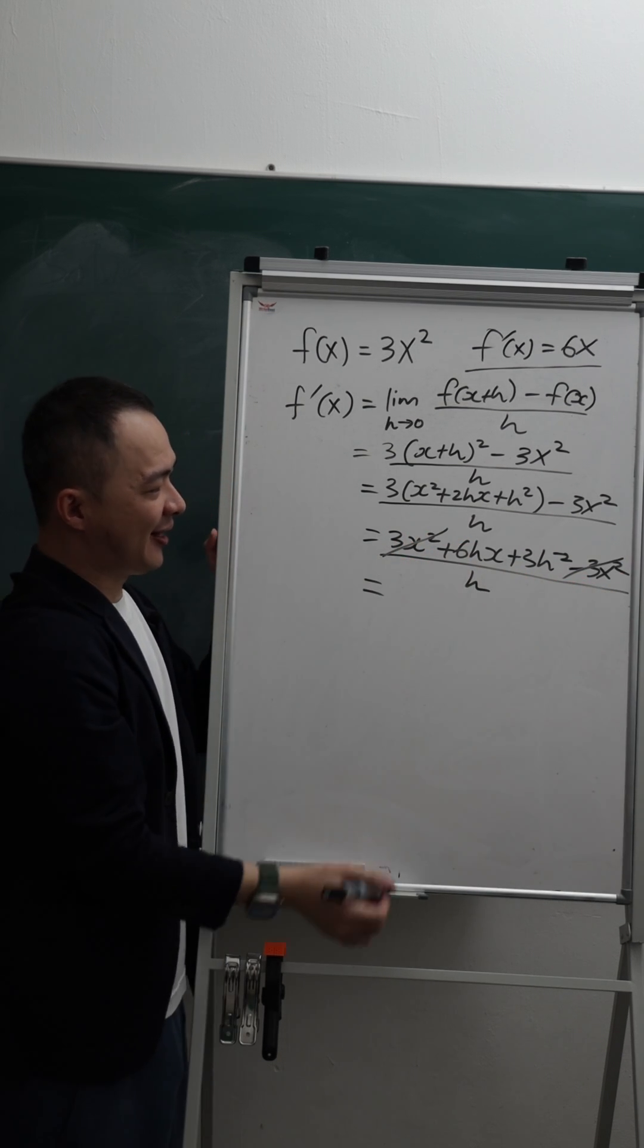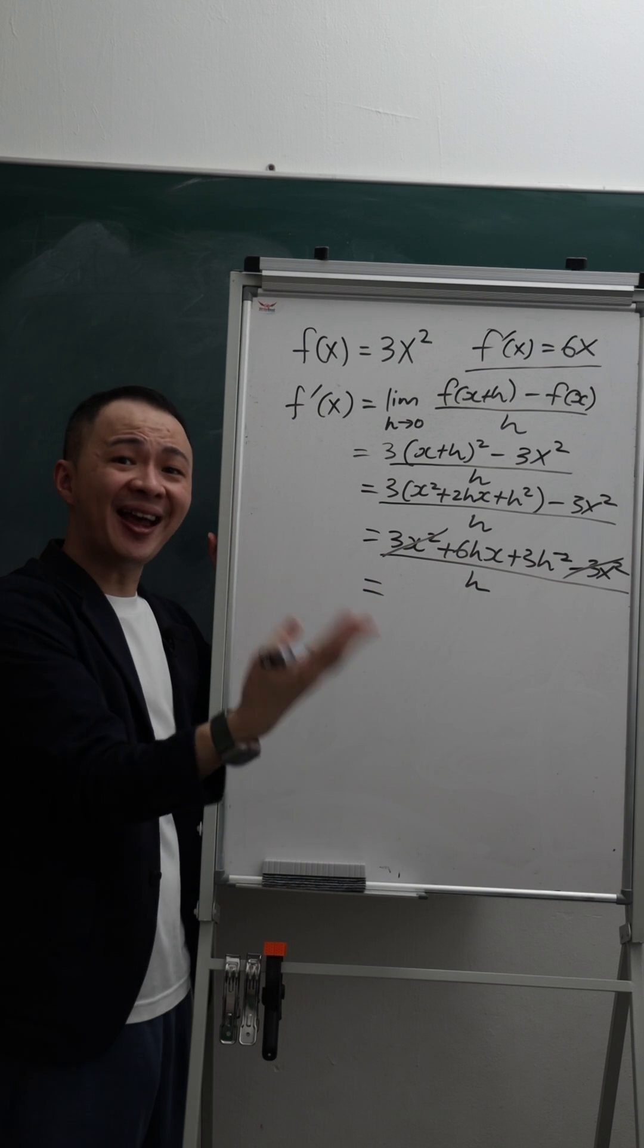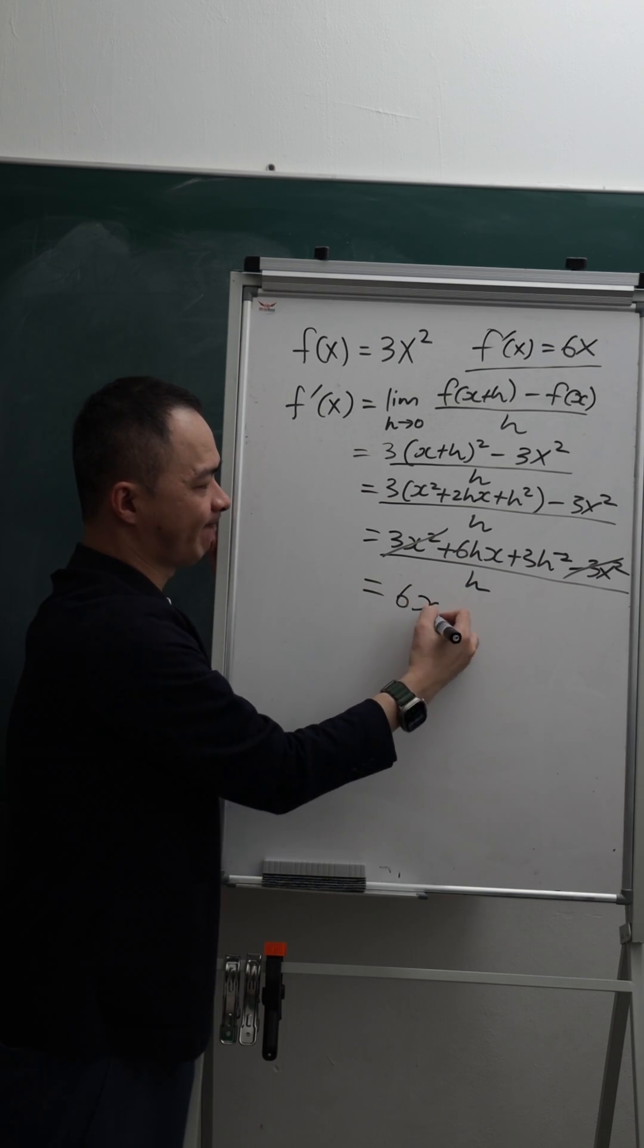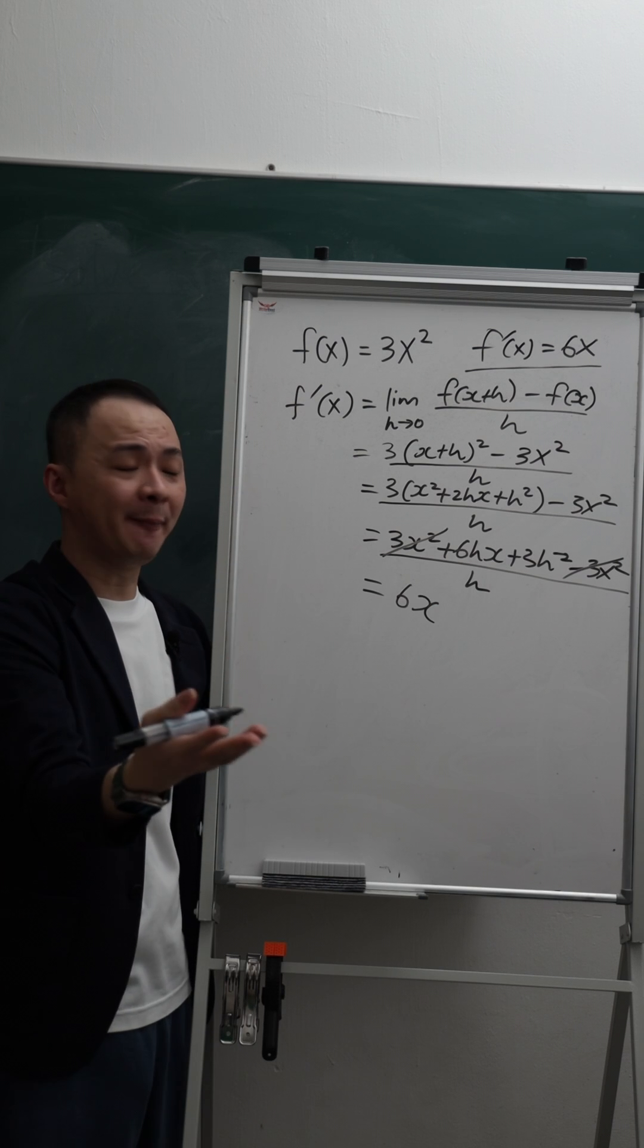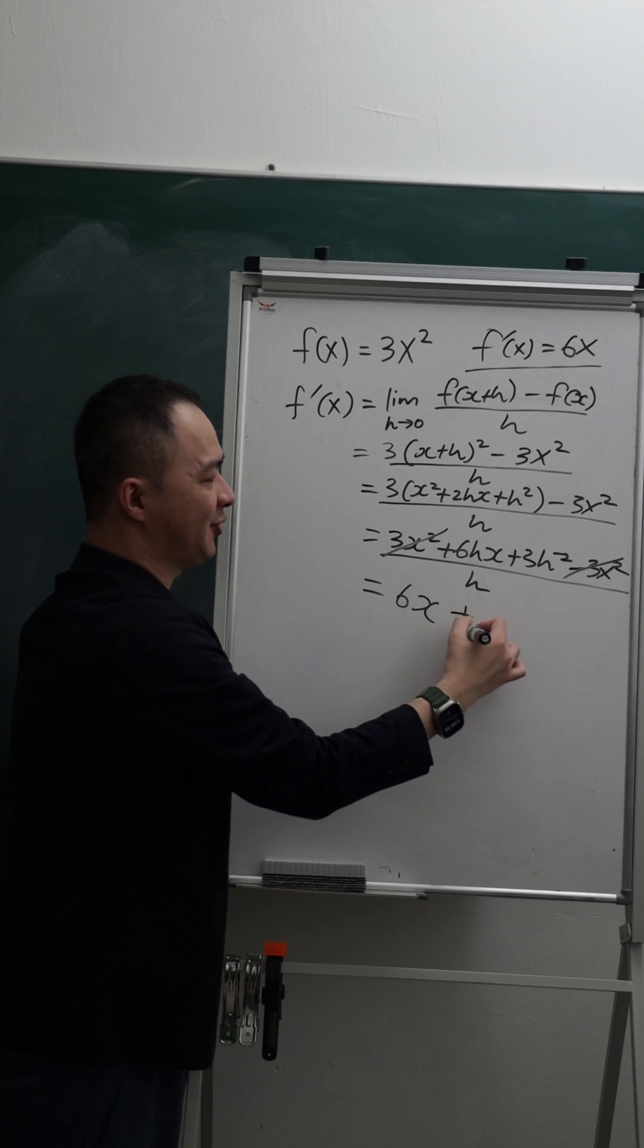And then 6hx divided by h gives us 6x. And then 3h² divided by h, I still have 3h.